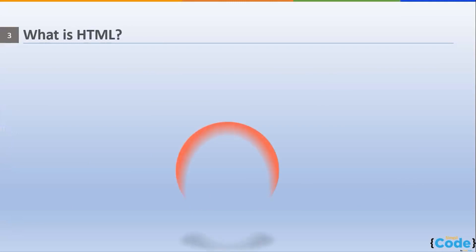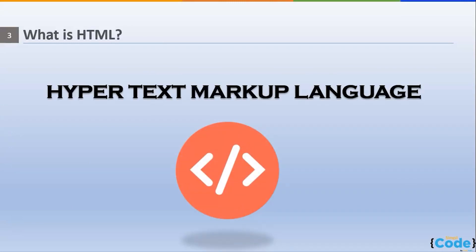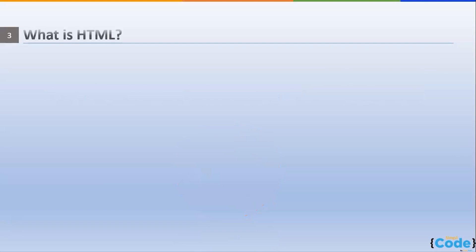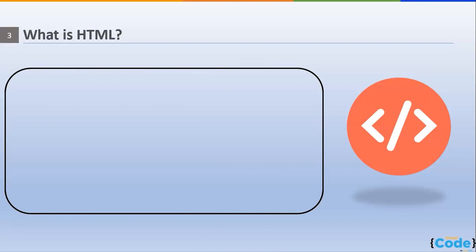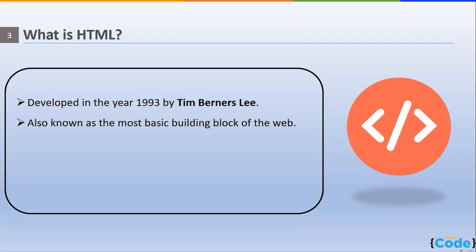HTML stands for Hypertext Markup Language. It was introduced in 1993 by Tim Berners-Lee, the same person who invented the World Wide Web in 1989. The first version was written in 1991 and released in 1993 as HTML 1.0. The current ongoing version is HTML 5.0. HTML is the most basic building block of the web, used to create the structure of any website with predefined tags.